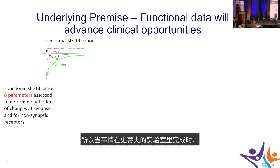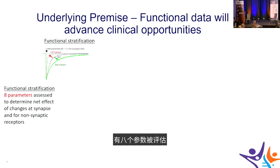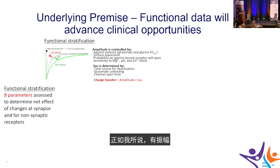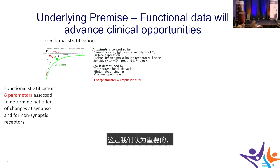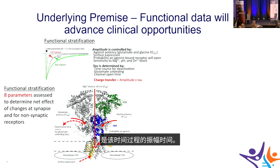In Steve's lab, eight parameters are assessed to determine the net effect of changes at synaptic and non-synaptic receptors. These include amplitude and time course; the charge transfer — which is considered most important — is the amplitude multiplied by the time course.